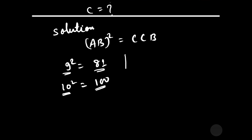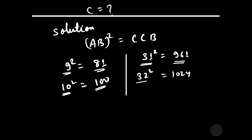Now let us find the largest value. If you square 31, you get 961, which is a three-digit number. If you square 32, you get 1024, which is a four-digit number. Therefore, the largest value of AB is 31. So the value of AB lies between 10 and 31.